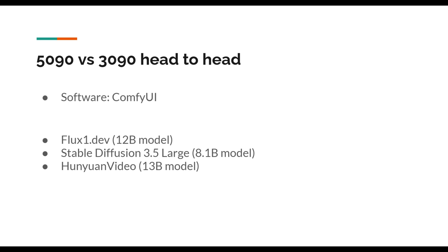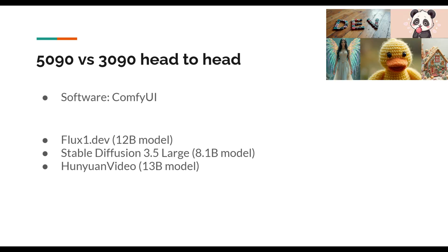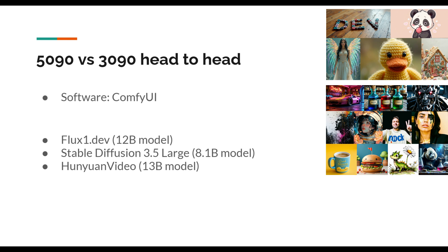For the testing, I will be using the ComfyUI interface. If you are not familiar with it, please check out my previous video. For the models, I will be testing three of them. First one is flux1.dev, which is a 12 billion parameter model that can be used to generate really photorealistic images. Second one is Stable Diffusion 3.5, which can also generate high-quality images. For the text-to-video model, I will be using HuanYuan Video, which is a 13 billion parameter model.